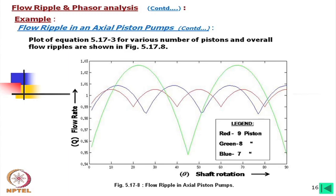In some special designs, the swash plate is also offset from the shaft axis, not just tilted. Adding this offset introduces additional terms to the volume equation, making the flow curve deviate further from a pure sinusoidal shape. Through phasor analysis, we can determine the general form of flow ripple in rotary piston pumps.